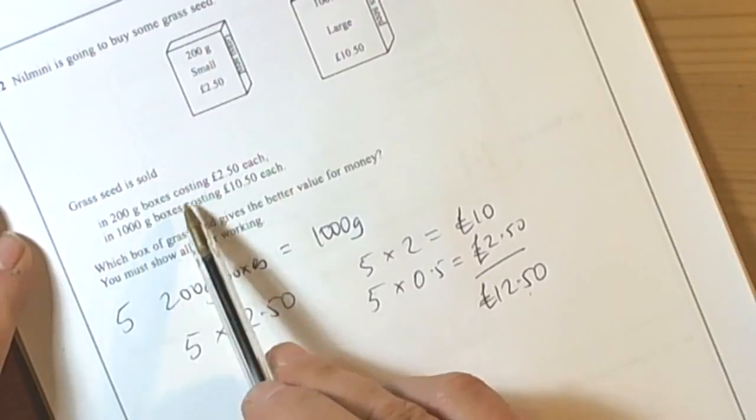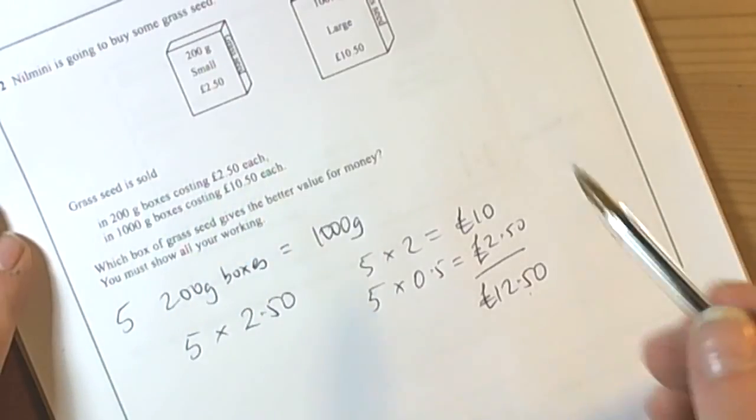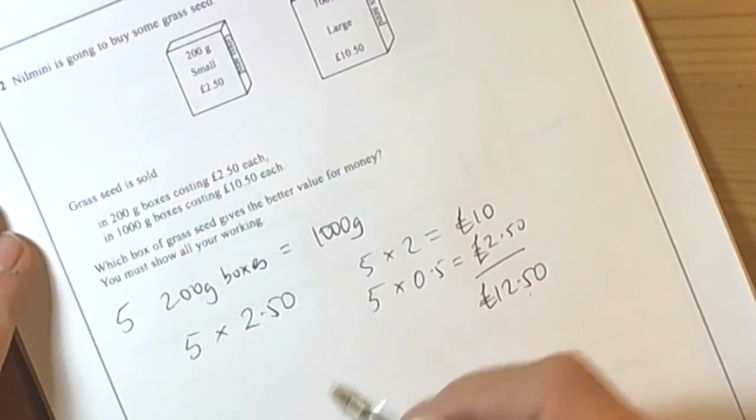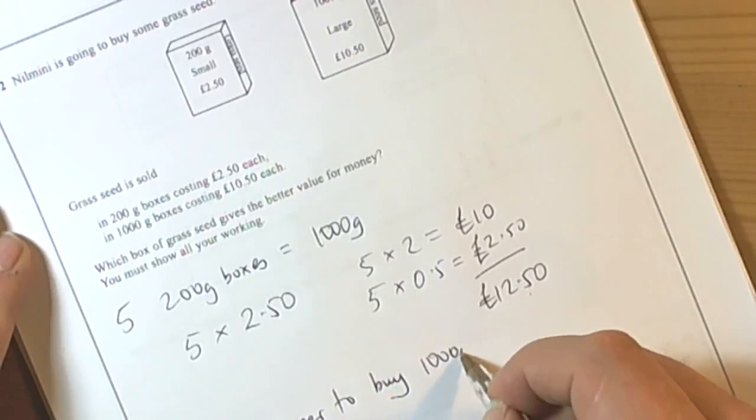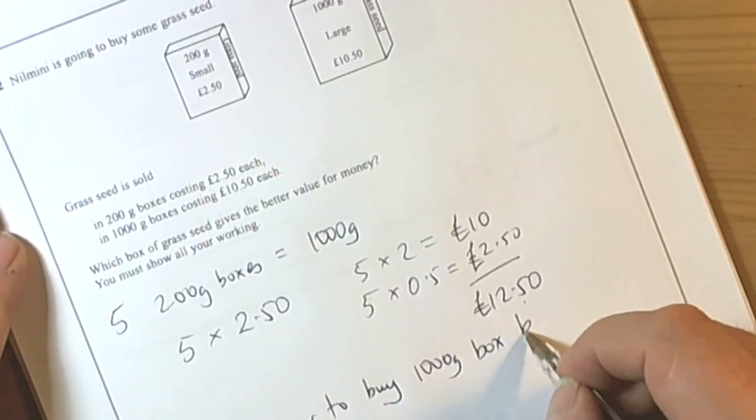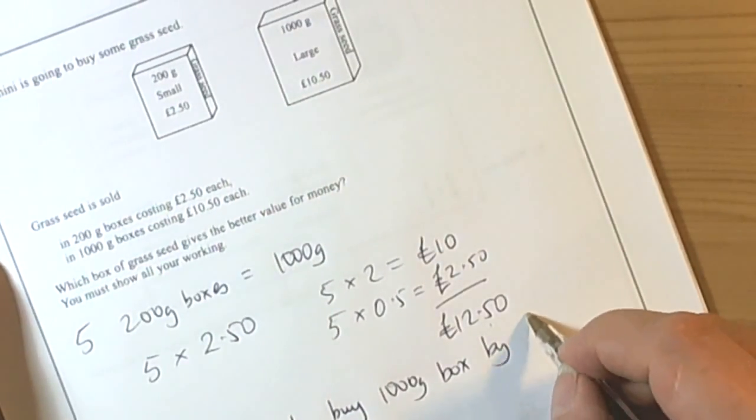If I'm buying the 1000g box itself, it's only going to cost me £10.50. So we finish off by saying, a sentence, star question, so cheaper to buy the 1000g box by £2.